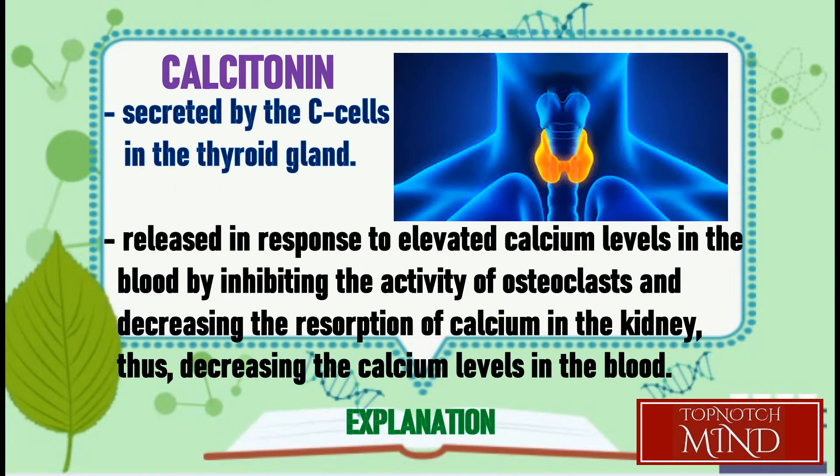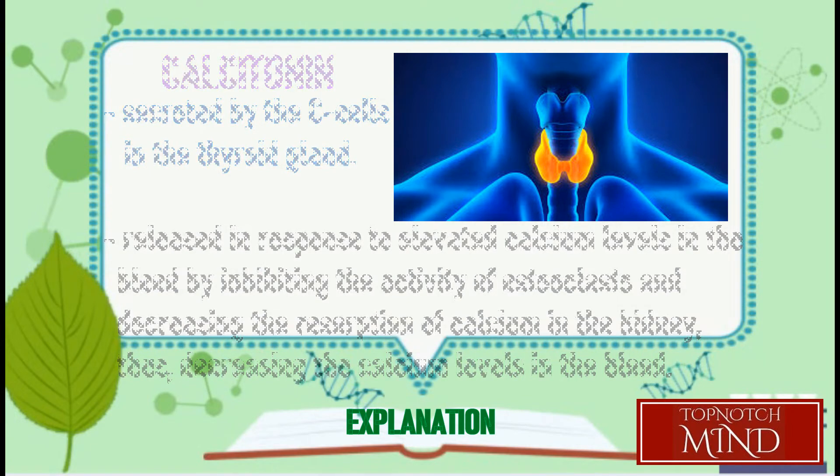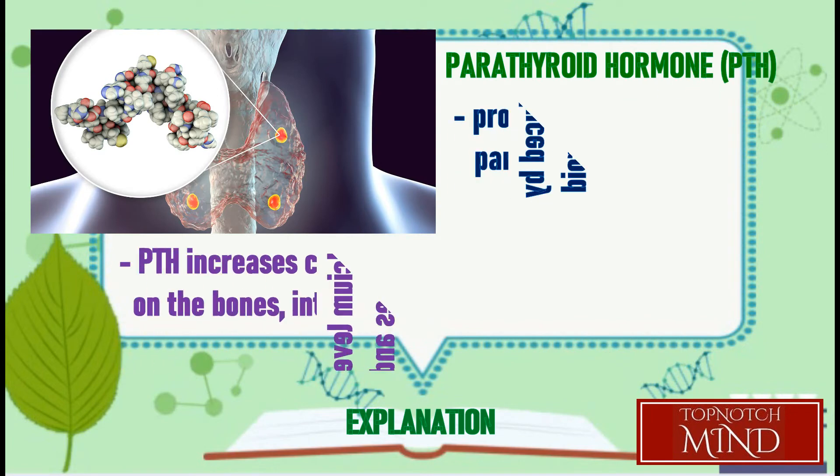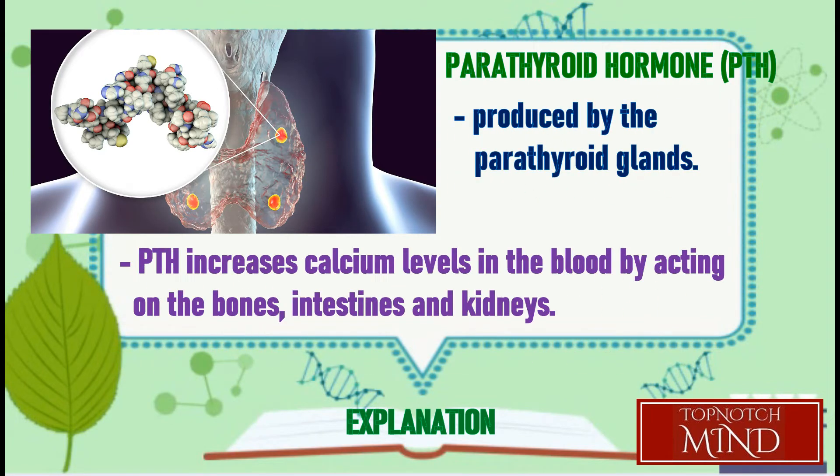Calcitonin, synthesized and secreted by C cells in the thyroid gland, lowers the concentration of calcium in the blood when it rises above the normal value. On the other hand, parathyroid hormone, secreted from four parathyroid glands, regulates calcium levels in the blood by increasing the levels when they are too low.